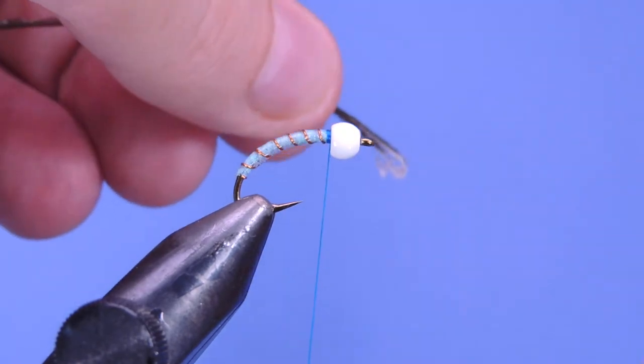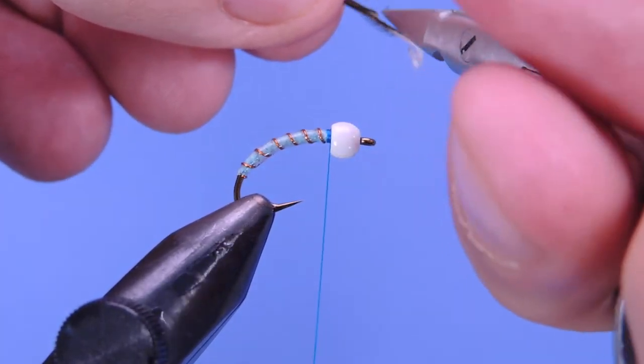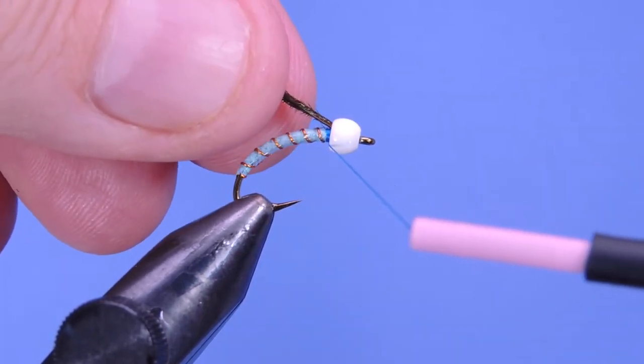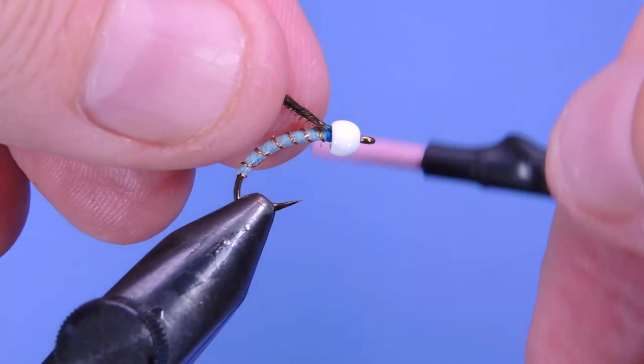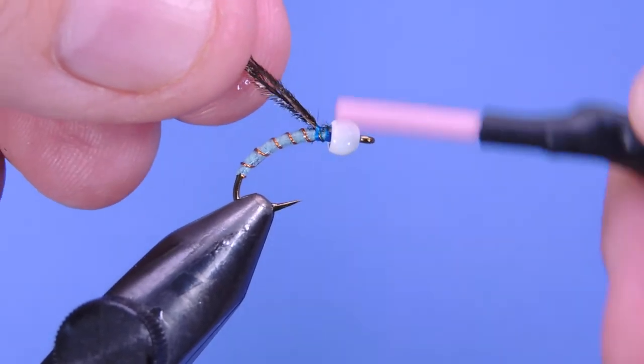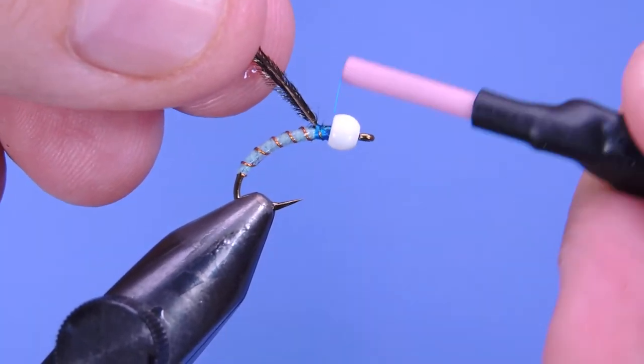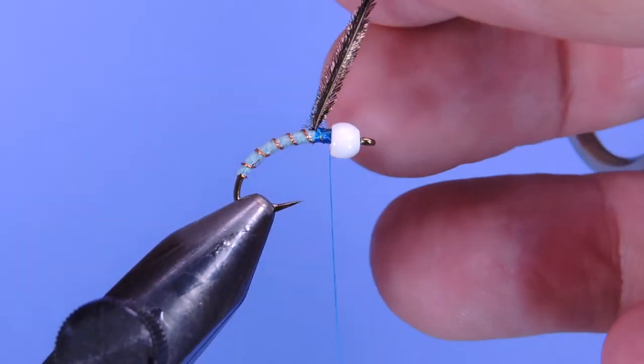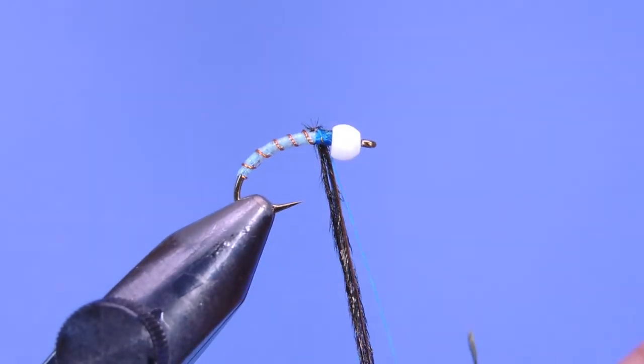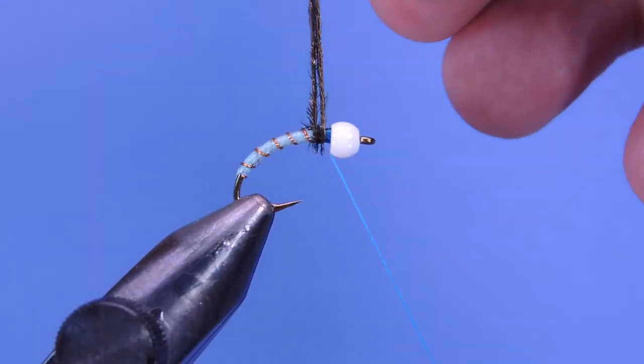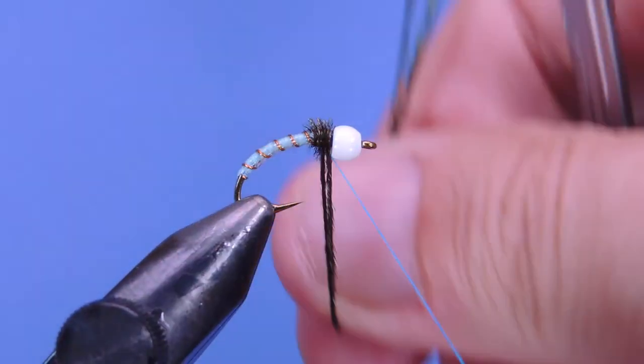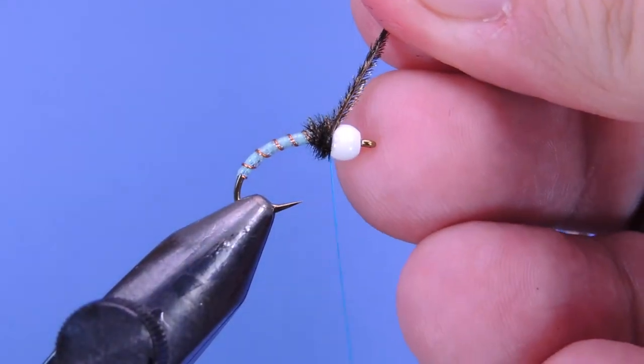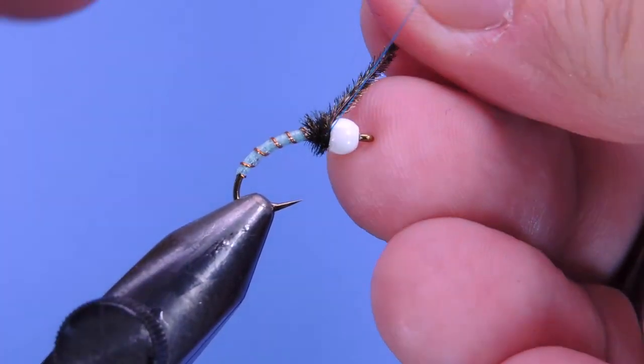So I just got two peacock herls that I took off a stem. I'm just going to trim the bottom. We're just going to insert the tag ends into the bead here, a couple wraps of thread. And we're just going to start at the back and then wind forward. I like to get that fairly thick.